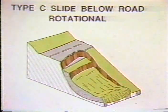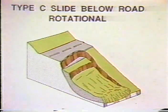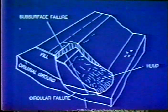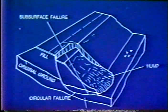Rotational slides also occur below the road, which is a very common type of highway failure. The failure plane may pass through only the fill material or through the original ground. Note the circular failure arc. Usually when this type of slide occurs, the failure arc passes through a very soft, weak foundation soil — that's what causes the slide.